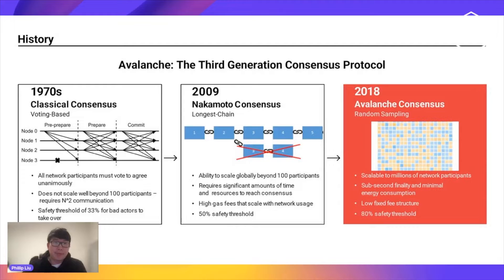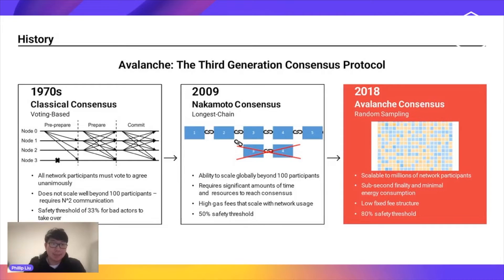Before we talk about subnets, it's helpful to talk a little about the underlying technology of Avalanche. Avalanche is a third-generation consensus protocol that operates in a way completely different from any other consensus family before it. Starting with the first family, called classical consensus — this is very well studied in academia and well suited for permissioned settings. Large tech companies are most likely running classical consensus in their databases, and they're relatively performant. But the main drawback is that they don't scale well beyond 100 participants, so they're not suited for a decentralized environment.